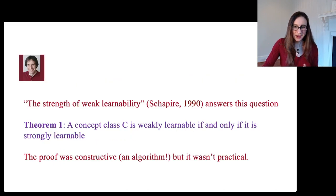The first answer to this question was by Rob Schapire, who wrote a paper called the strength of weak learnability that answered this question. This was a famous question and a very famous answer. He actually proved that weak learnability is the same as strong learnability. In particular, his first theorem states that a concept class is weakly learnable if and only if it is strongly learnable. The proof was actually an algorithm that turned a weak learning algorithm into a strong one. But the algorithm that he produced in this paper, although it answered this question, wasn't actually a practical algorithm.